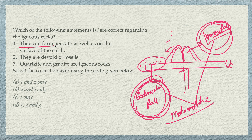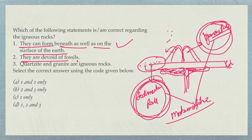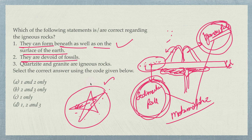Now, regarding igneous rocks: they can form beneath as well as on the surface of the earth — yes, lava can deposit underground too, so statement one is correct. They are devoid of fossils — when lava is coming it is so hot that it demolishes everything, including fossils. The rock itself starts melting, so it's impossible for fossils to survive. Statement two is also correct.